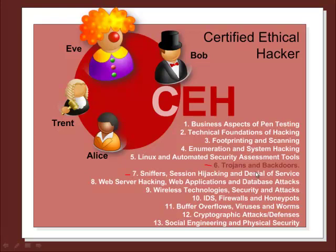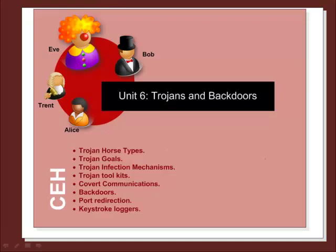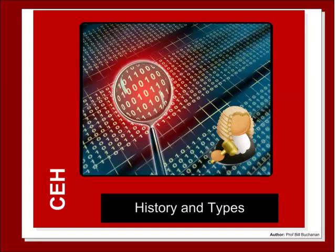This unit looks at Trojans and backdoors. The goals for Unit 6 include looking at basic Trojan horse types, their goals, infection mechanisms, rootkits, covert communications, backdoors, port redirection, and keystroke loggers.